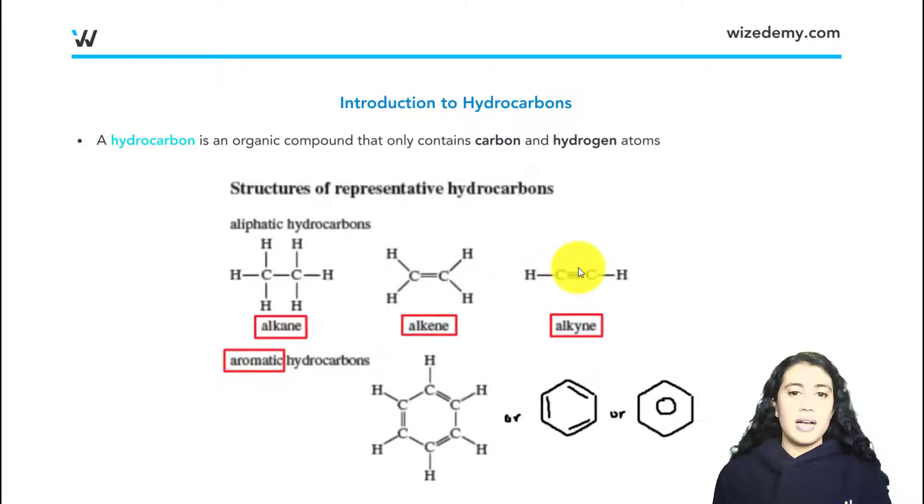An alkyne has a carbon-carbon triple bond. And then we also mentioned the benzene ring is a type of hydrocarbon, and we call this one an aromatic hydrocarbon. It gets the name just because benzene rings and other compounds that are similar to benzene, if we combine multiple of them, they are known for giving off strong odors. So that's where they get the name aromatic hydrocarbons.